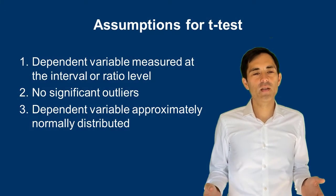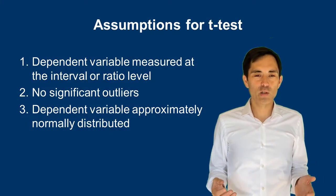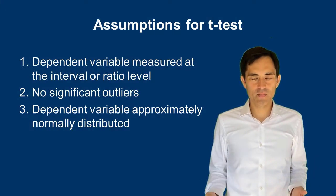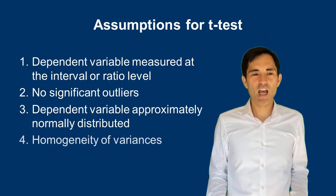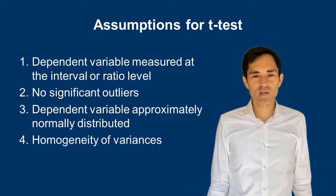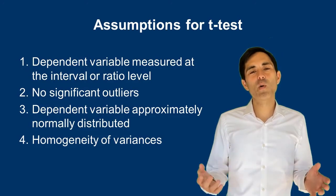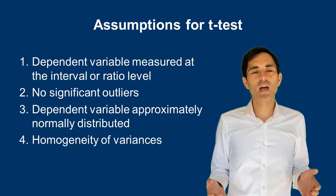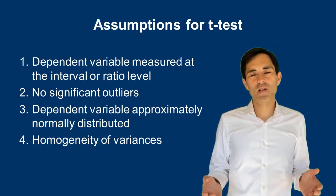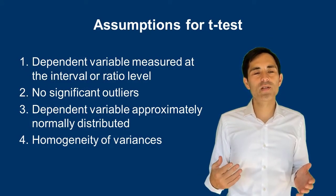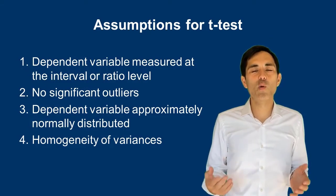Third, the dependent variable should be approximately normally distributed. And fourth, there should be homogeneity of variances across the different groups. In most statistical packages there is a test for this, and if these assumptions are violated, an alternative test result is provided which is more robust.